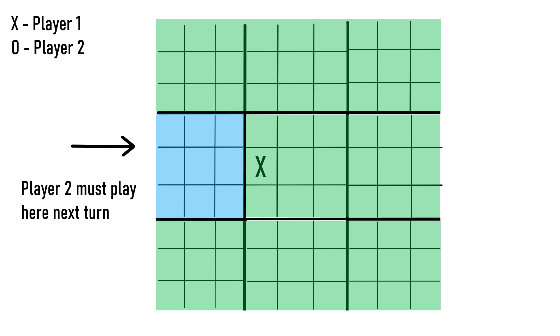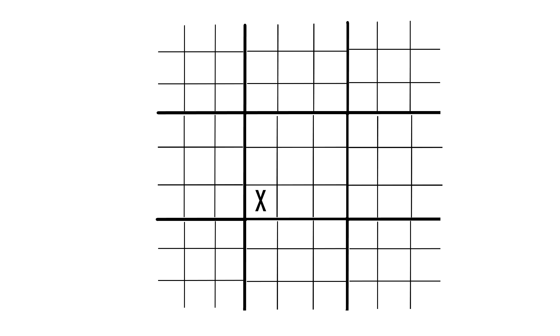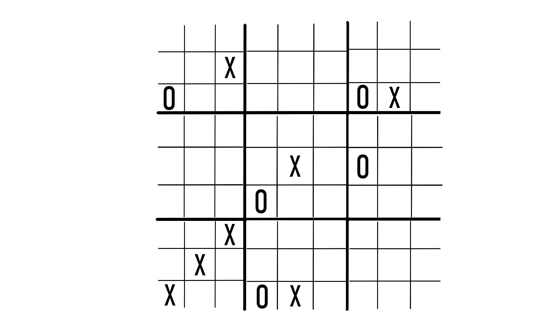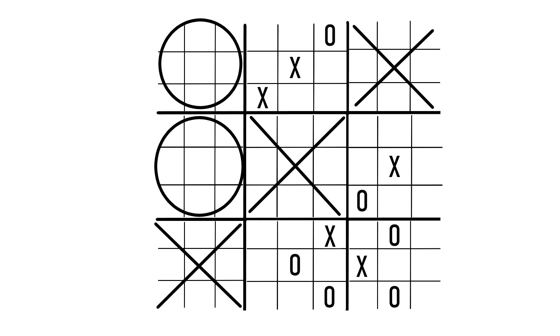For example, if player 1 chooses to go in this square, player 2 will have to play in the bottom left local board on their next turn. If player 1 goes here, then player 2 will have to play on the middle local board next turn. If a player wins a local board, as shown here, then that board turns into a win for them on the global board. To win the game, you must win the global board.